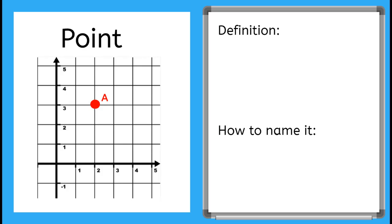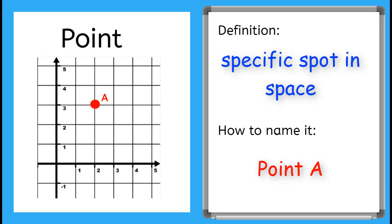The first figure we're going to cover is a point. A point is a definite or specific spot in space, but it doesn't have a shape or a size. Notice in the picture that the point has a label, A. We name points with what they are in their label, so this point is named point A.